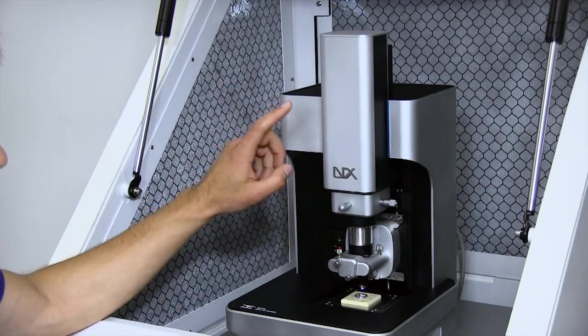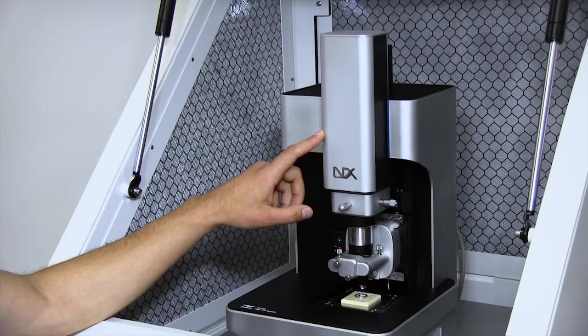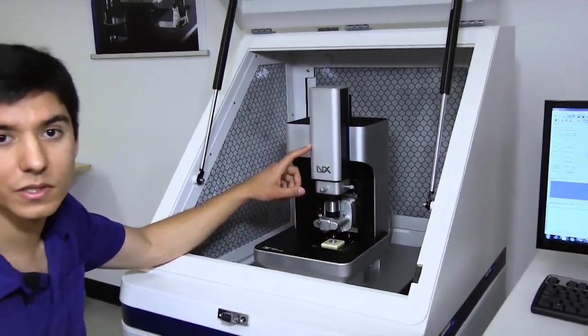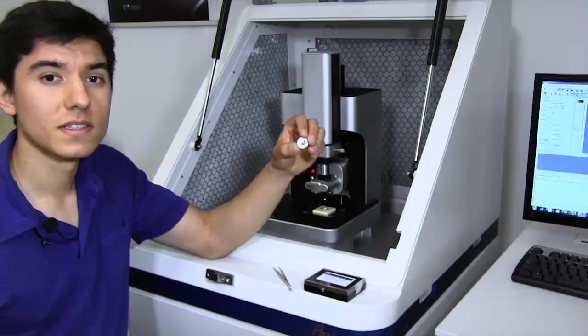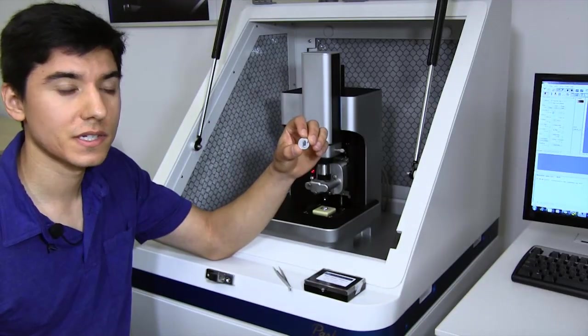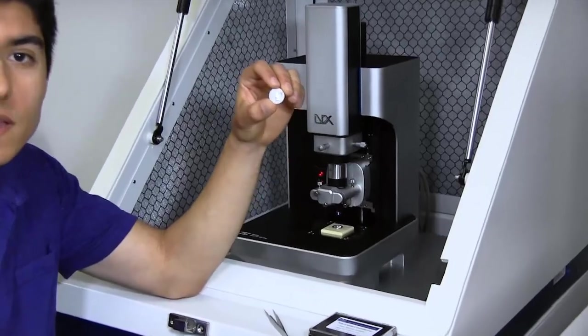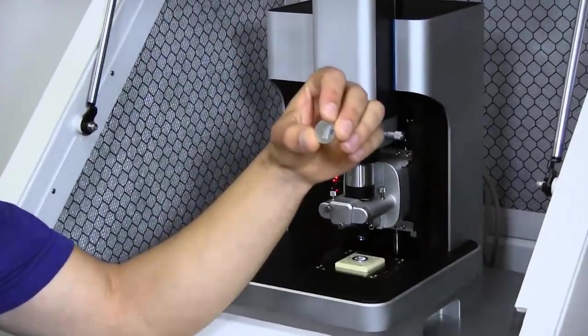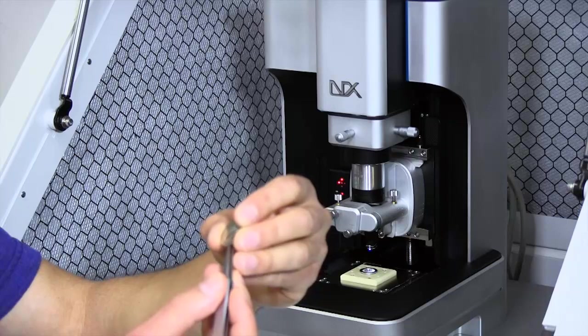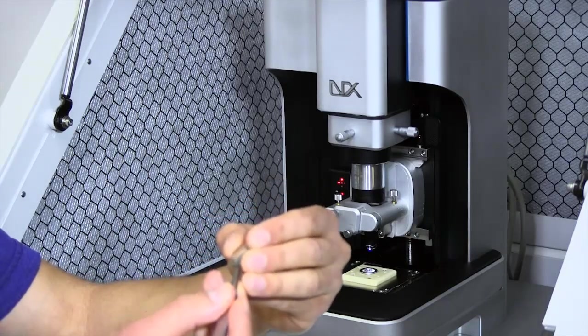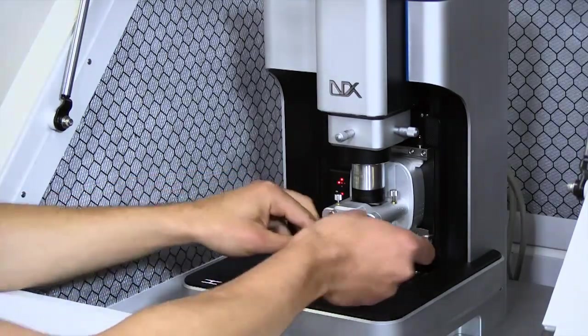We can see the view of the optical microscope through a camera connected to the computer at the user control station. The sample I'm using is anodic aluminum oxide, which has nanoscale features. It's used to study nanoscale physics and as a template for building very small structures. Let me load that in the AFM.